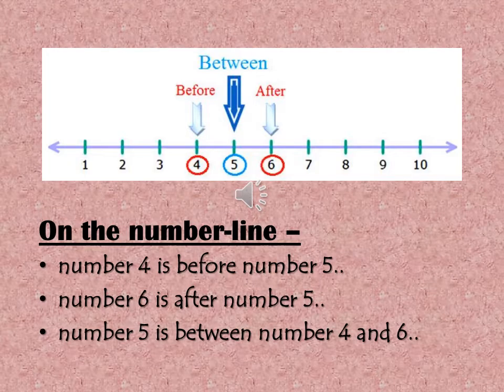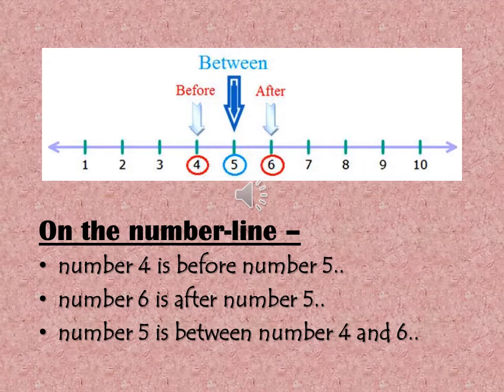Here you can see a slide of a number line starting from the number one: one, two, three, four, five, six, seven, eight, nine, and ten. On this number line we have circled the number five. On the right we have circled the red number six — that's the after number — and before, we have circled number four. So it's going to be four, five, and six. Five is the between number, six is the after number, and four is the before number.